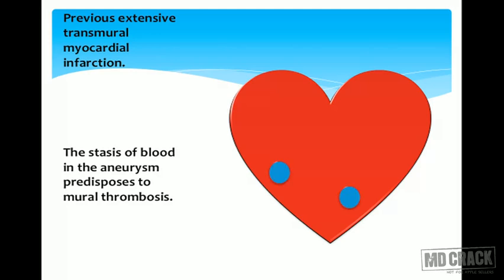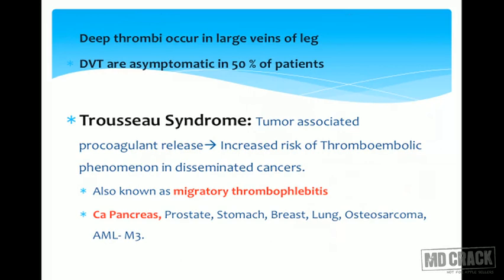Stasis of blood results in formation of a thrombus within the chambers of the heart — such a thrombus is called a mural thrombus. A mural thrombus formed within the right side of the heart results in migration into the pulmonary vessels. If formed on the left side, it migrates into the aorta and becomes a systemic embolus. Mural thrombi are very common after myocardial infarction. Deep venous thrombosis is very common in persons who stand for long periods, such as bus conductors, most commonly in the left leg.